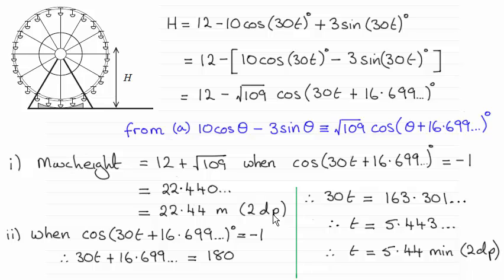And we need to give this to two decimal places, so you can see it turns out to be 22.44. And we had to work out then the first value of t that this occurred at. So when the cosine of this angle in here equals minus one, if you inverse cosine minus one, it's going to be at 180 degrees.